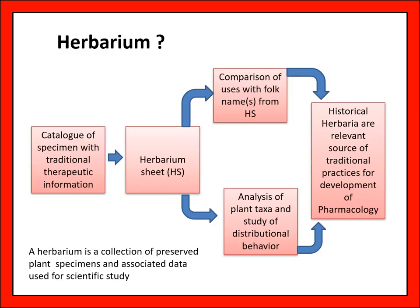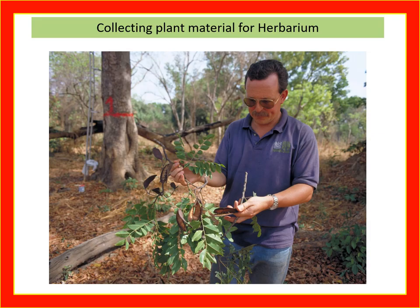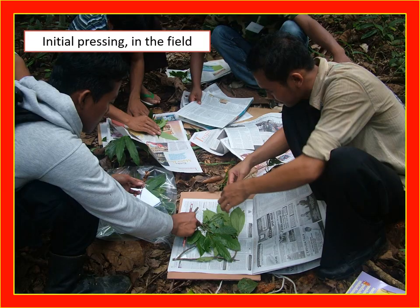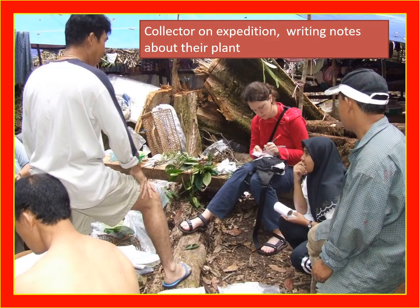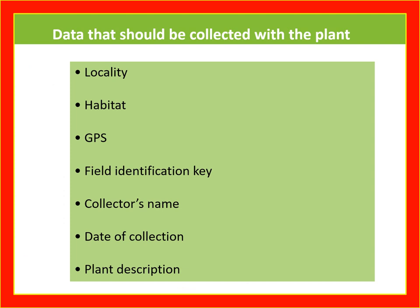A herbarium is a catalogue of specimens with traditional triptych information. A herbarium sheet allows comparison of specimens with known names, analysis of plant text, and study of distributional behaviour. Historical herbaria are a relevant source of traditional practices for development of pharmacology. Herbarium techniques include collecting plant material, initial pressing in the field, and labelling. Labelling is important — collectors on expeditions should write notes about their plants, including locality, habitat, GPS, field identification key, collector's name, date of collection, and plant description.